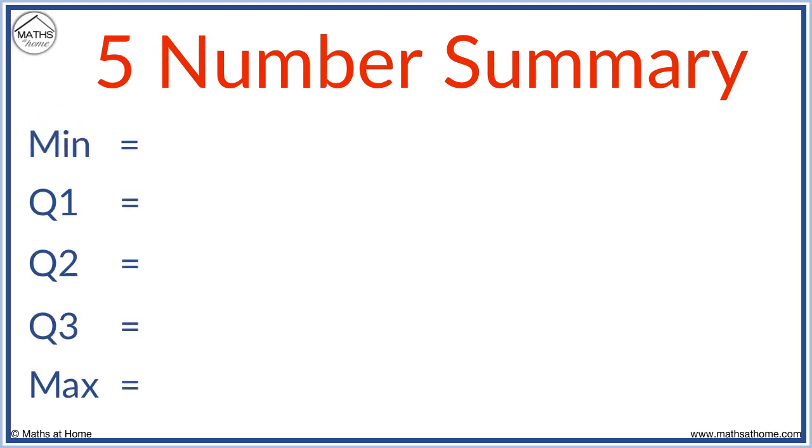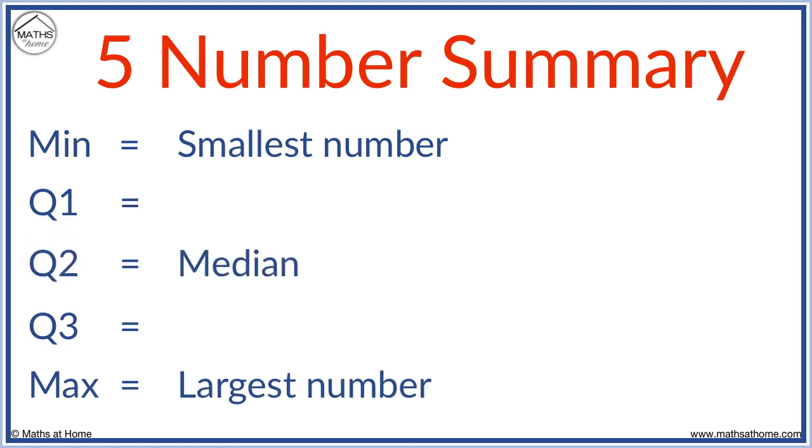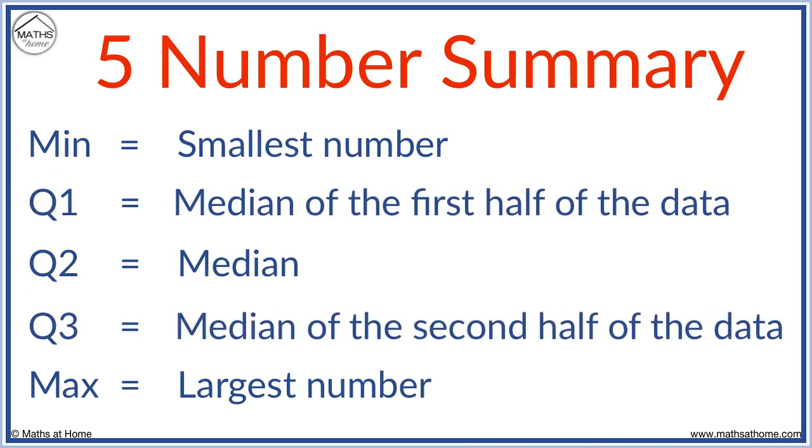The minimum is just the smallest number. The maximum is the largest number. The second quartile, or Q2, is simply the median. Q1 is found by finding the median of the first half of the data. Q3 is found by finding the median of the second half of the data.